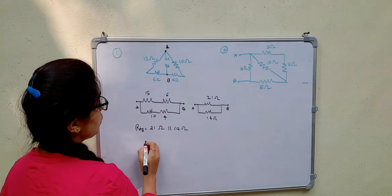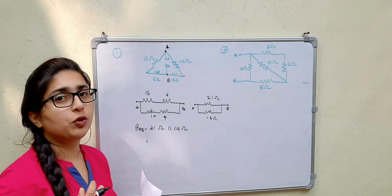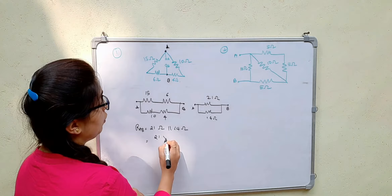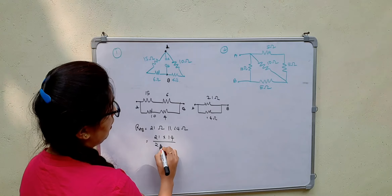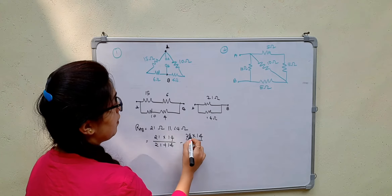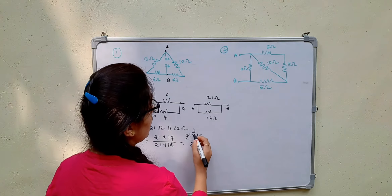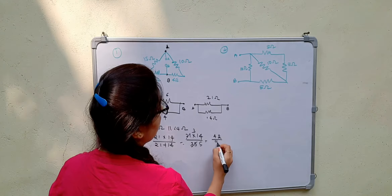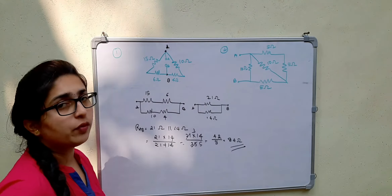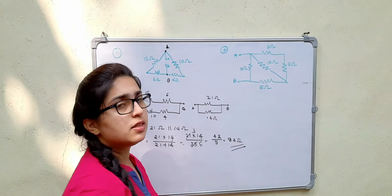Using the parallel combination formula: R = (R1 × R2) / (R1 + R2), we get (21 × 14) / (21 + 14) = 294 / 35 = 42 / 5 = 8.4 ohms. So the equivalent resistance R_AB = 8.4 ohms.